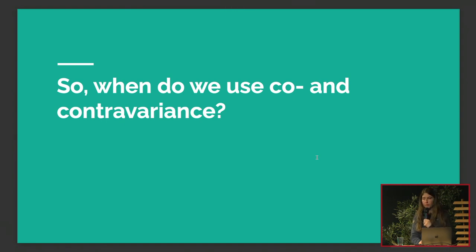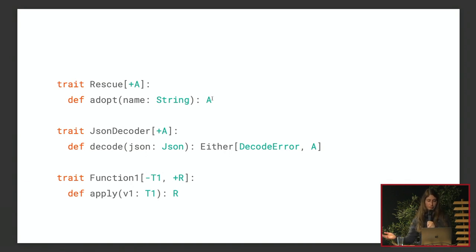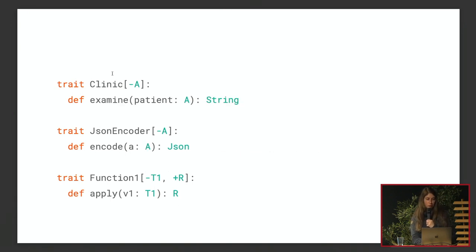You may have started to spot a pattern: covariant type parameters tend to represent outputs — Rescue returns an A, JSON Decoder returns maybe an A, and Function1 returns an R. Contravariant type parameters represent inputs — Clinic takes a patient of type A, JSON Encoder takes an A, Function1 takes a T1. Covariance is for outputs; contravariance is for inputs.